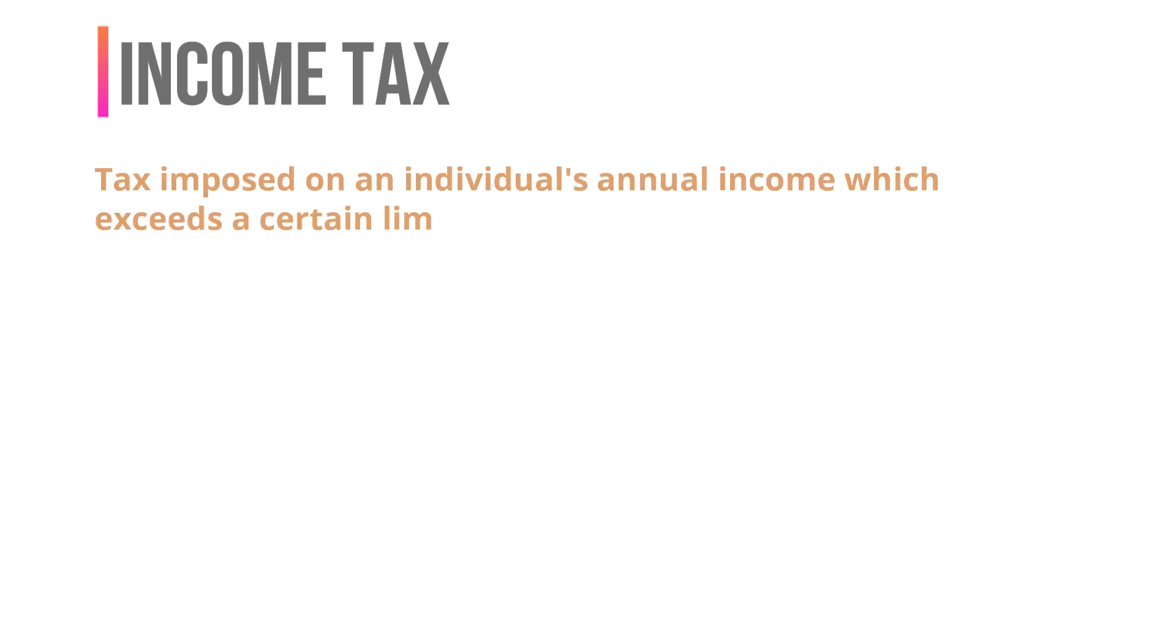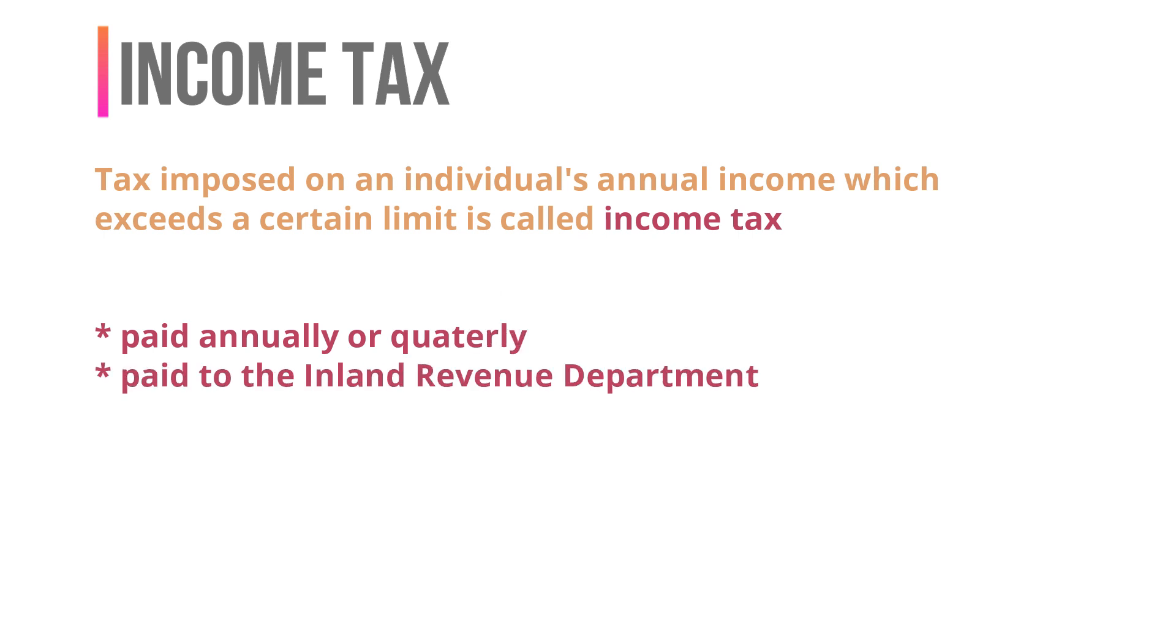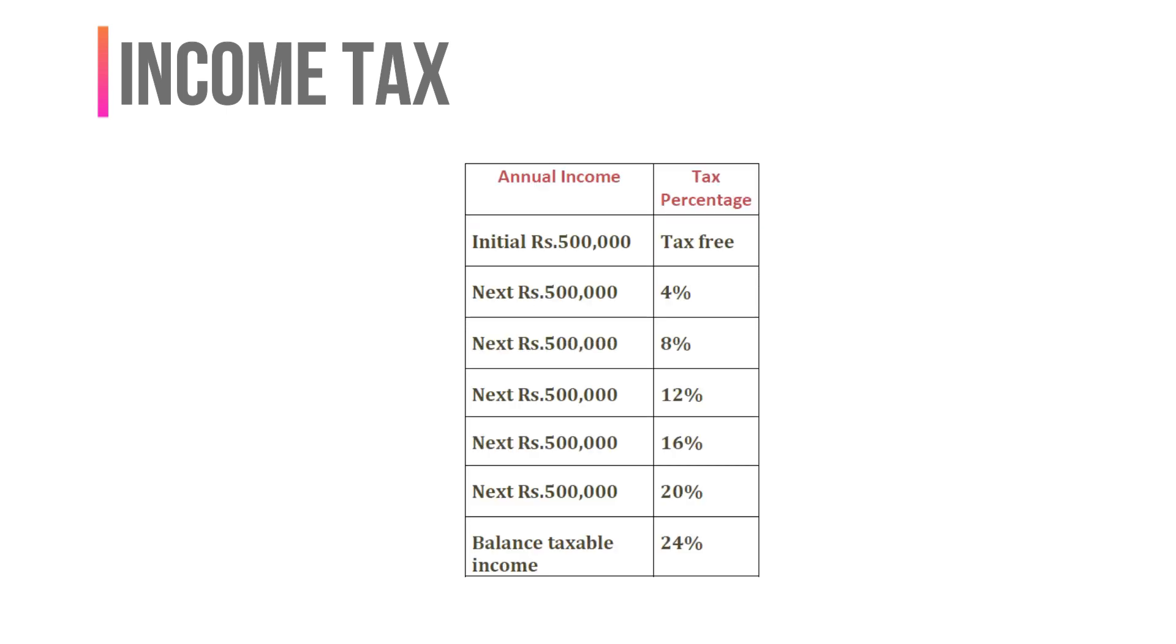Next we are going to see what is income tax. The tax imposed on an individual's annual income which exceeds a certain limit is called income tax. It is paid annually or quarterly to the inland revenue department. This table which was implemented by the inland revenue department tells us the method of calculating the income tax based on the annual income. It can be easily understood by the following example.